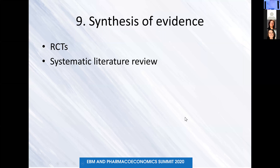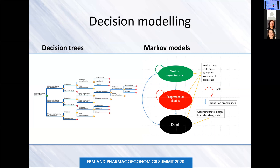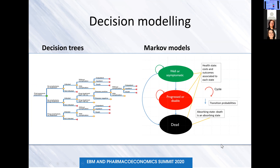The synthesis of evidence is provided through randomized controlled trial data and systematic literature reviews. When there is not enough evidence, health economists build models. Even when RCT evidence exists and we want to see what happens beyond the trial, we use decision modeling in the form of decision trees and Markov models. Decision trees are useful for acute conditions with short timeframes, while Markov models are used for chronic conditions or complex interventions. Both provide estimations of cost and outcomes over time.